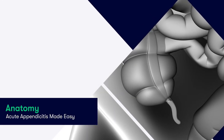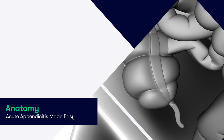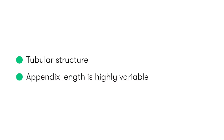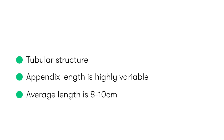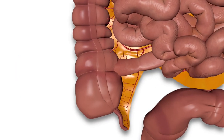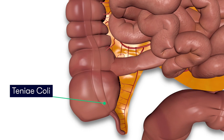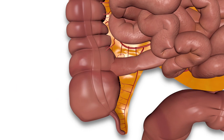If we now take a look at the anatomy of the appendix, it's a tubular structure which looks like a worm. It does vary in length between individuals, measuring between 2cm to 20cm, but the average length is around 8 to 10cm. Typically, the base of the appendix is located at the point of the cecum where the longitudinal taeniae coli converge, giving us an easy way to find the appendix if we're struggling to locate it during surgery.